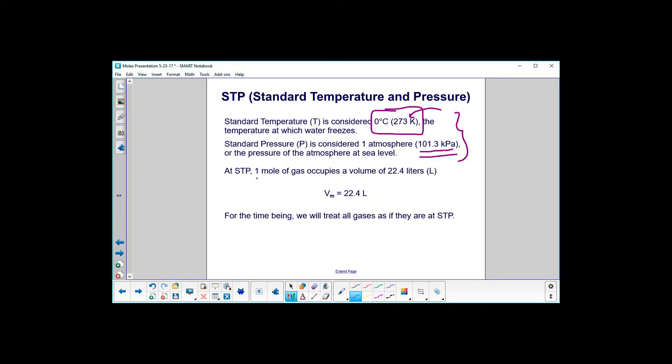At STP, one mole of gas will occupy 22.4 liters. This is a number you're going to get very familiar with, and it's designated as V sub little m. For the time being, we'll treat all gases as if they are at STP.